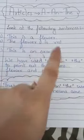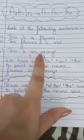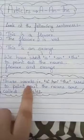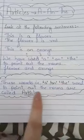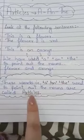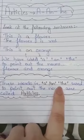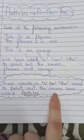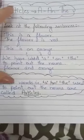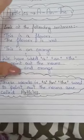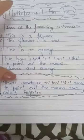These words — 'a', 'an', and 'the' — used to point out the nouns are called articles. These are called articles. 'A', 'an', and 'the', used to point out the nouns, are called articles.